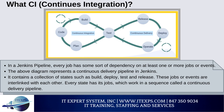In a Jenkins pipeline, every job has some sort of dependency on at least one or more jobs or events. A continuous delivery pipeline in Jenkins contains a collection of states such as build, deploy, test, and release. These jobs or events are interlinked with each other, and every state has its jobs which work in a sequence called a continuous delivery pipeline.